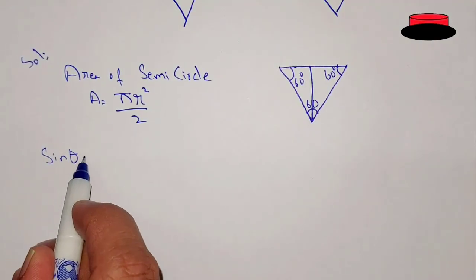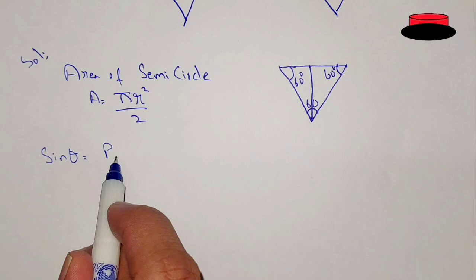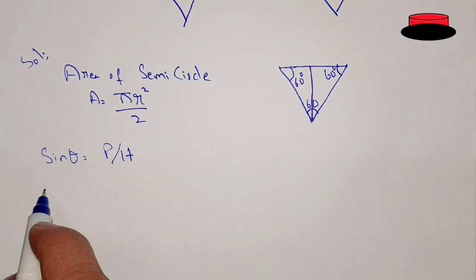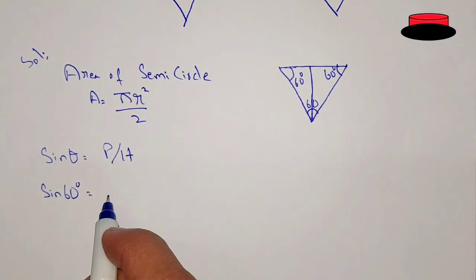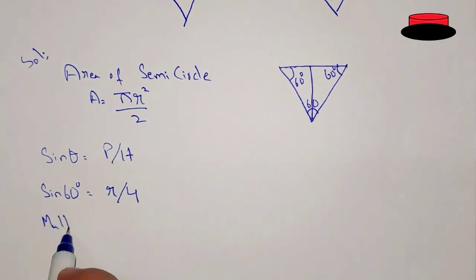We can use the formula sin theta equal to perpendicular over hypotenuse. Sin 60 degree, that is going to be the perpendicular is r, the radius divided by the hypotenuse is the biggest side which is equal to 4. Because half of the length is 4.